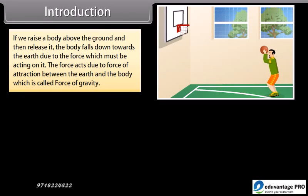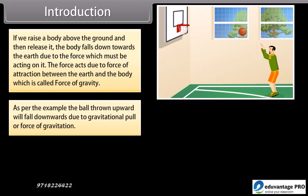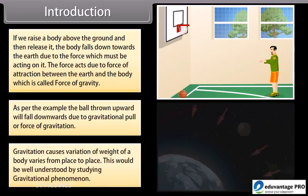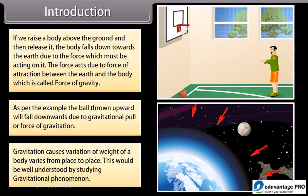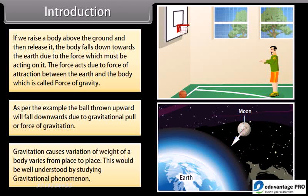Introduction: If we raise a body above the ground and then release it, the body falls down towards the earth due to the force of attraction between the earth and the body, which is called force of gravity. For example, a ball thrown upward will fall downwards due to gravitational pull. Gravitation causes variation of weight — a body's weight varies from place to place, which can be understood by studying gravitational phenomenon.